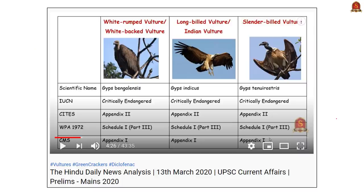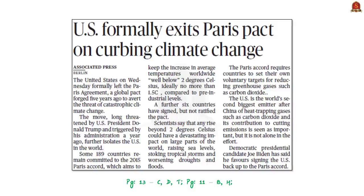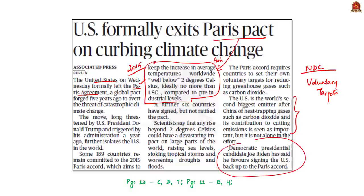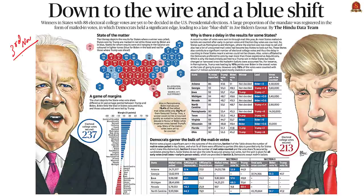To know more about vultures, viewers are requested to watch the 13th March 2020 Hindu News Analysis. The next news article tells that the US has formally exited from the Paris Pact — the Paris Climate Agreement signed in 2015. This agreement aims to keep the increase in average temperatures worldwide well below 2 degrees Celsius and if possible to limit it to 1.5 degrees Celsius compared to pre-industrial levels. The US is the world's second largest emitter after China, so USA exiting from this pact is of great significance. There might be a change based on the recent elections that concluded on 3rd November in the USA, and we will have detailed analysis regarding US elections in our upcoming analysis.